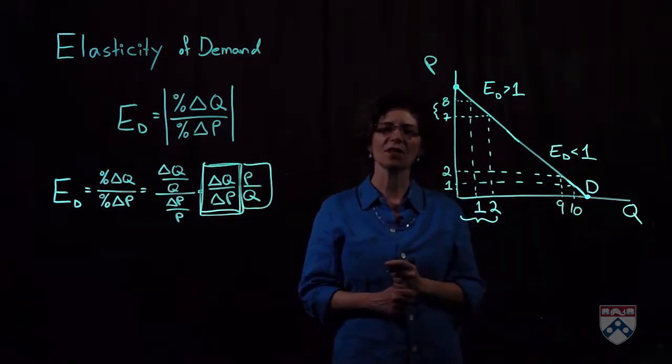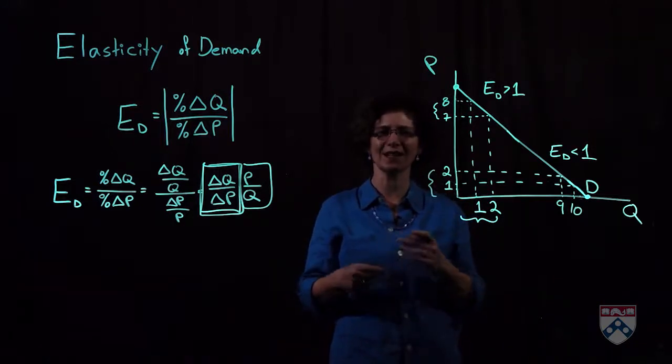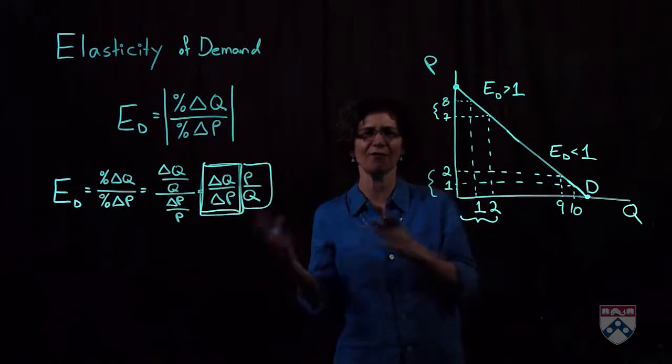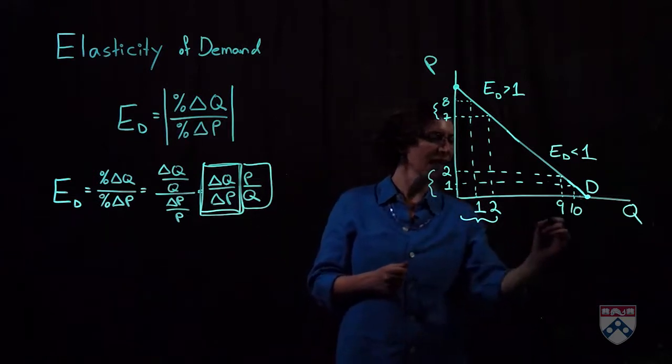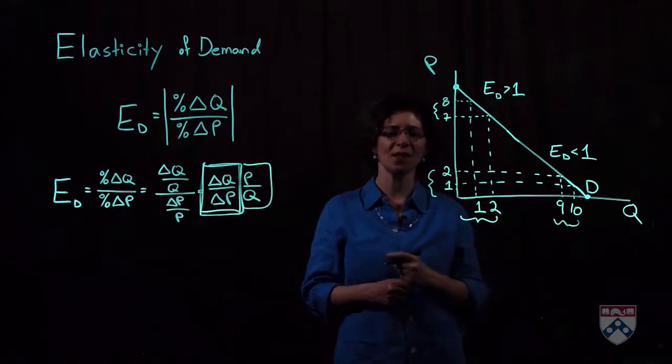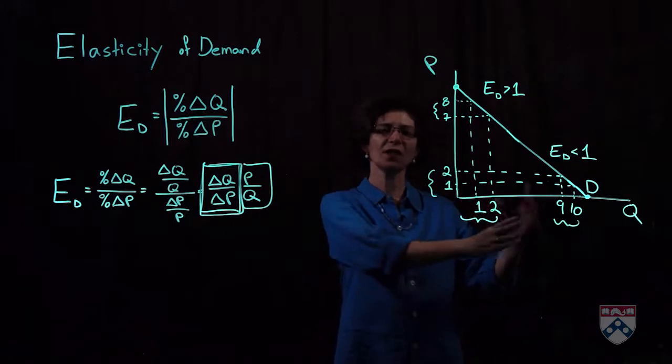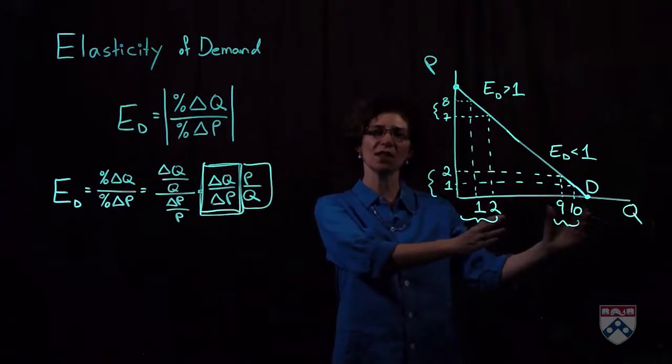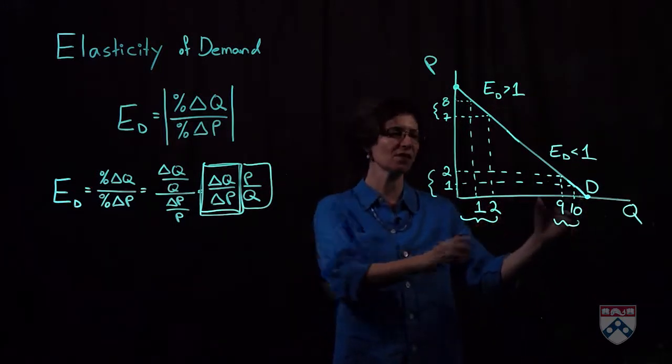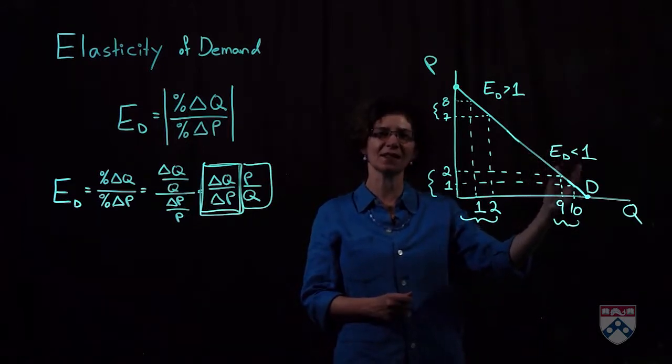But what does this mean in terms of percentage change? The percentage change in price here is about 50%, right? It's a 50% drop in price, and the change in quantity is only about 10%. So here, a big change in price in terms of percentage points caused only a small change in quantity in terms of percentage terms, which is why elasticity of demand is less than one.